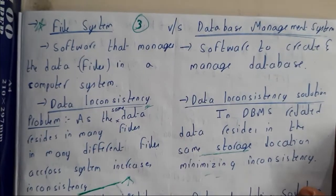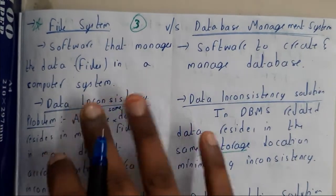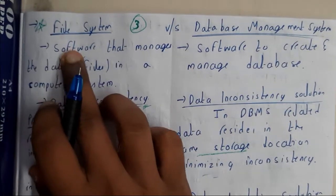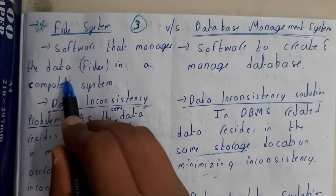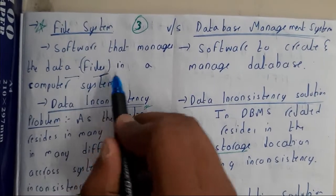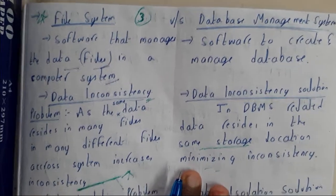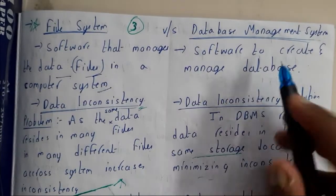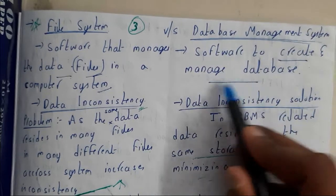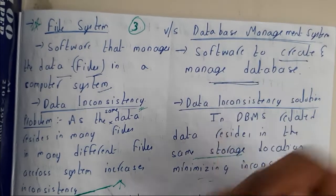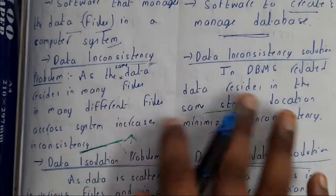Now let us go through the main differences one after the other. File system is software that manages data files in a computer system, whereas a database management system creates and manages the database according to our requirement.